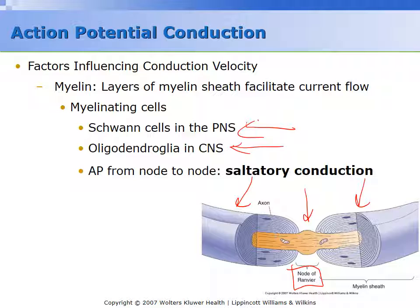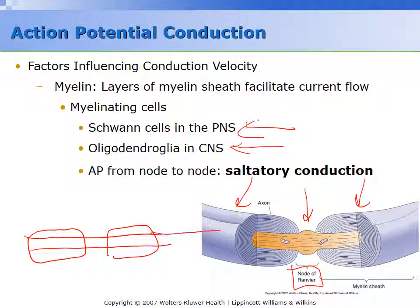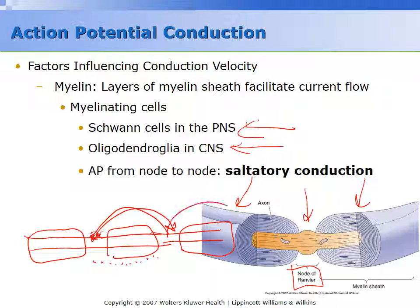If you imagine the axon with myelin sheets around it, there would be an accumulation of charge at each node that, upon reaching a particular magnitude, would jump from one node to another. So rather than the potential going sequentially, it actually jumps from one node to another — one node to another — and that significantly increases the directionality and the speed of the action potential. This kind of conductance of action potential from node to node is known as saltatory conduction. It comes from a Latin word that basically means 'to skip.'